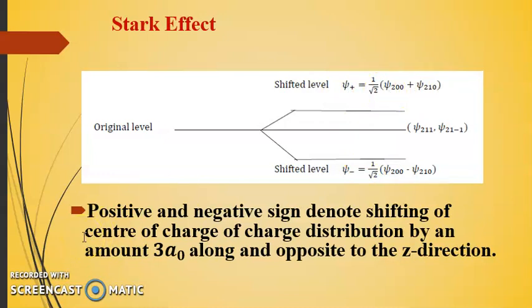This positive and negative sign denotes shifting of center of charge distribution by an amount 3a_0 along and opposite to the z direction. So this way, we have calculated the energy correction terms, second order correction term as well. And this way, we come to end of our lecture on Stark effect. Thank you so much.